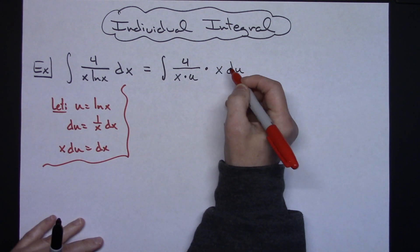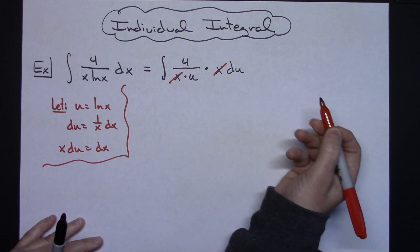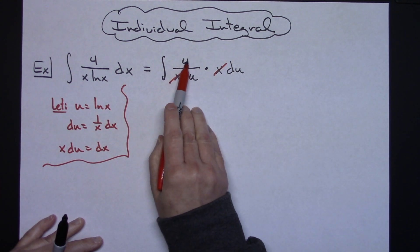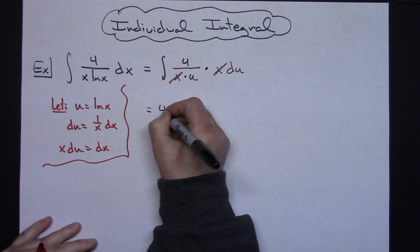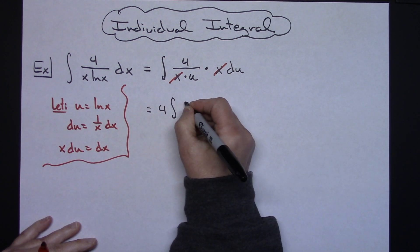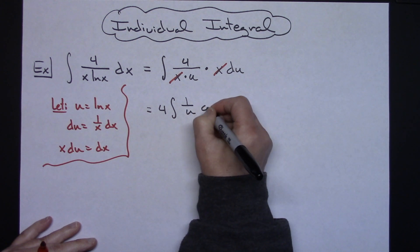That's going to then allow me to cross off my x's. In the next step I'm also going to pull out a 4 out in front of that integral. So then I'm going to have 4 times the integral of 1 over u du.